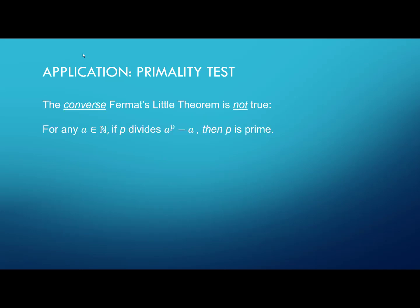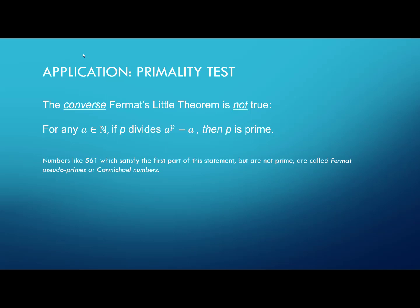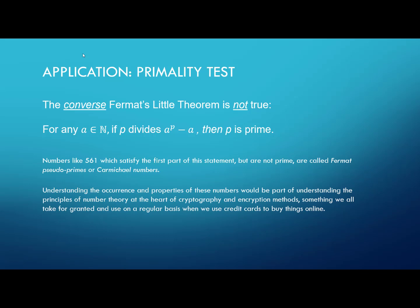The converse of Fermat's Little Theorem — 'if P divides A^P − A for every natural number A, then P is prime' — is not true. The first counterexample is P = 561: even though 561 divides A^561 − A for every natural number A, 561 = 3 × 11 × 17, so it isn't prime. Numbers like 561 are called Fermat pseudoprimes or Carmichael numbers. Understanding these numbers underlies the cryptographic principles used in everyday credit card encryption.